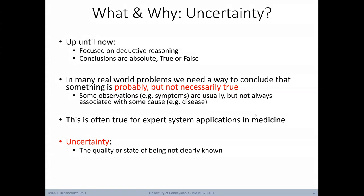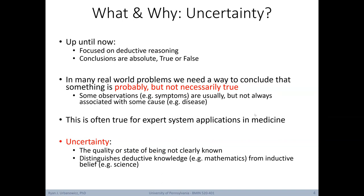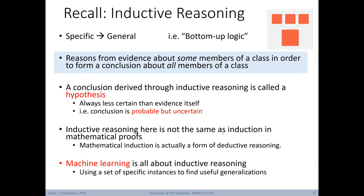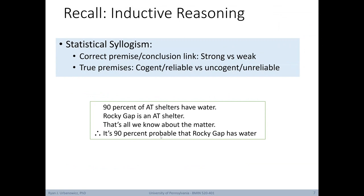Here we simply define uncertainty as the quality or state of being not clearly known. It's this idea of uncertainty that distinguishes deductive knowledge — for instance what we see in mathematics — from inductive belief, which is the foundation of most of science. Recall how we define deductive reasoning as reasoning from one or more statements to reach a logically certain conclusion. Inductive reasoning reasons from evidence about some members of a class in order to form a conclusion about all members of a class. We were previously introduced to the idea of a statistical syllogism, where individual premises can have a certainty associated with them, as well as the conclusion. For example, 90% of Adirondack trails have water, and we conclude that it's 90% probable that the Rocky Gap has water.